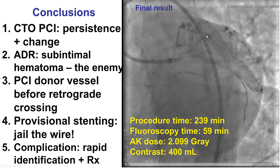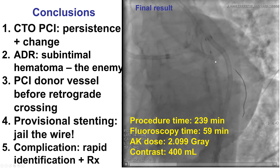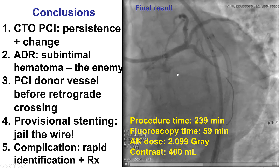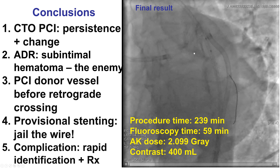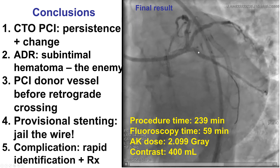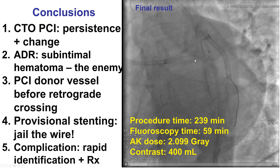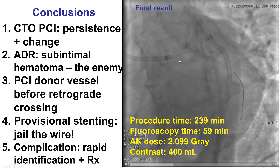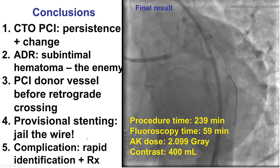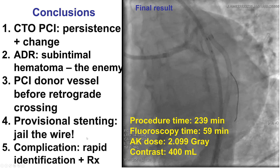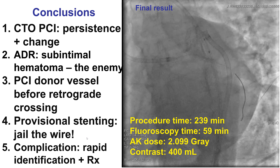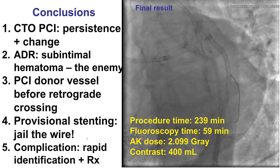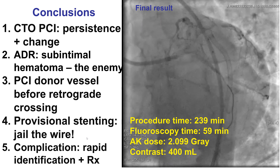When provisional stenting is done, it's critical to keep the wire in place. If we did not have a wire into the circumflex once we lost the vessel, it would have been a big trouble. Fortunately, we did have a guidewire, and that helped us balloon, get a stent, restore flow, and restore the patient's hemodynamics and resolve the chest pain and ST-segment elevation. Like every complication — in this case acute vessel closure — identifying it rapidly is critical, and taking care of it is critical before it creates a spiral of decline with shock and decreased coronary perfusion. Thank you.